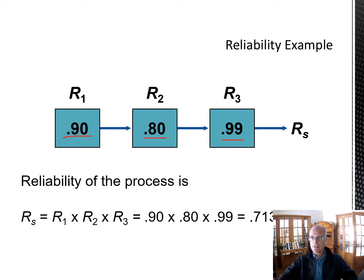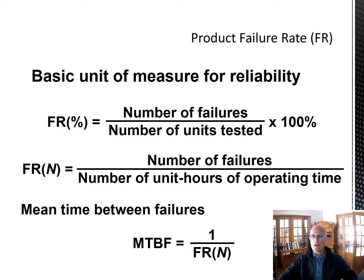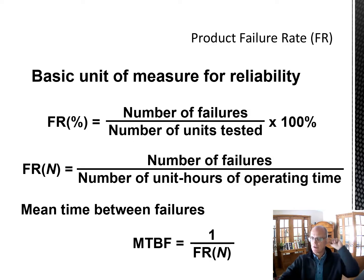The reliability is the probability that something works; the failure rate is the probability that something fails. The failure rate as a percentage is the number of failures divided by the number of units tested, times 100%. It is one minus the reliability. You can see how paying attention to these and building redundancy becomes critically important.